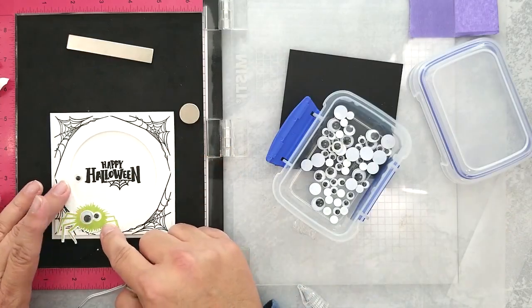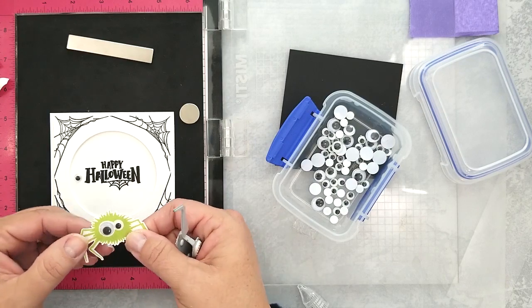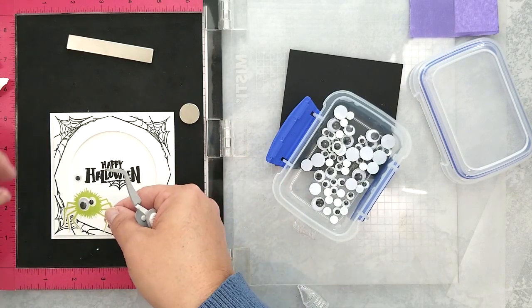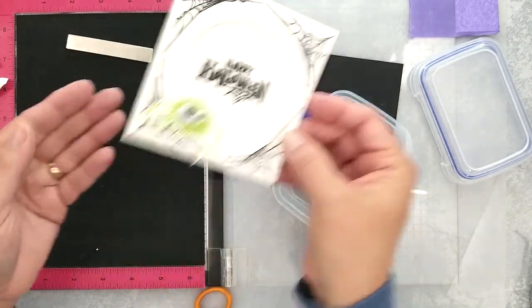I'm adding googly eyes to the lime green spider using a liquid adhesive and then add an action wobble to the back of the spider to adhere him to the card base.